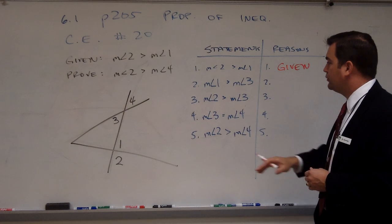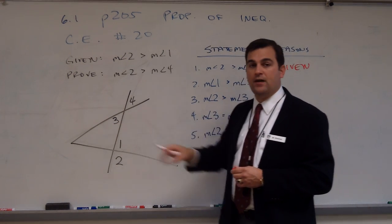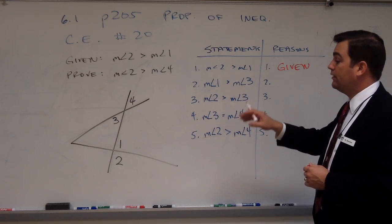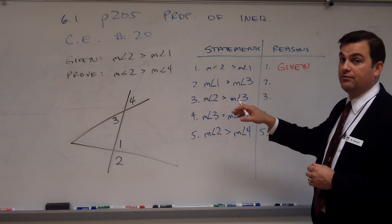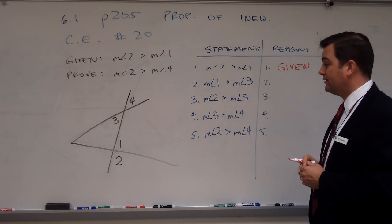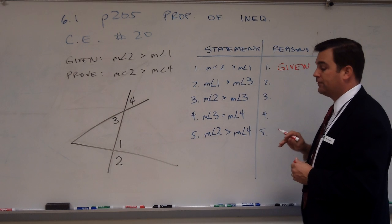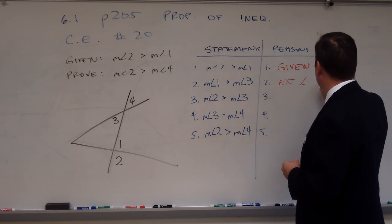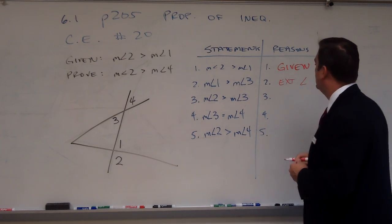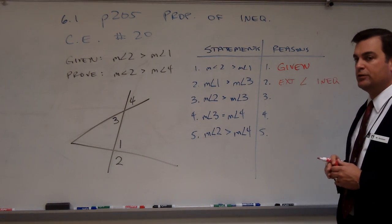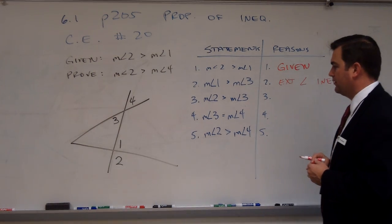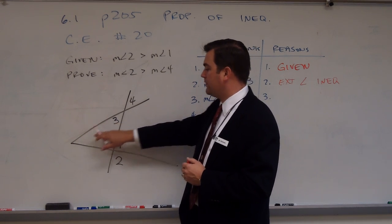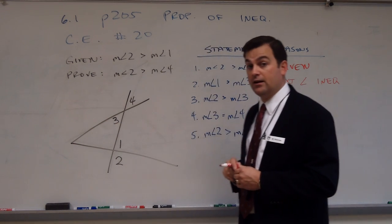Statement 2: the measure of angle 1 is greater than the measure of angle 3. This is the exterior angle inequality property — exterior angles are always greater than any remote interior angle. The exterior angle of any triangle will always be greater than either of its remote interior angles. Angle 1 is the exterior angle for remote interior angles 3 and some other unidentified angle.